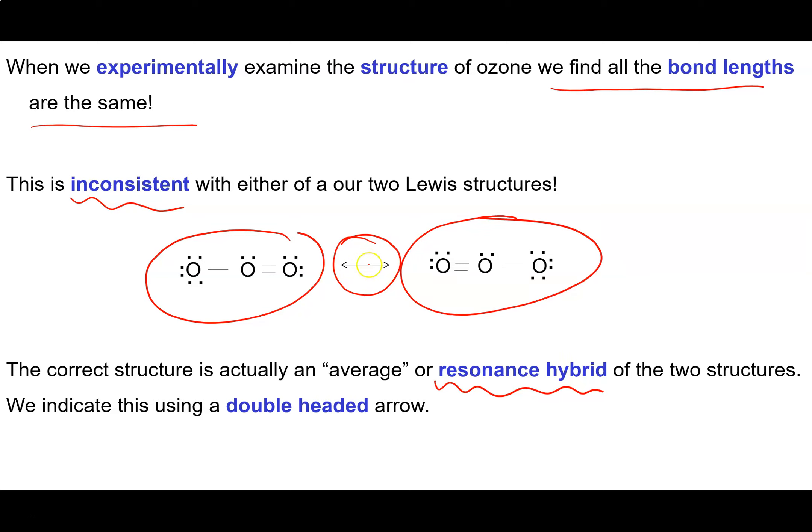Sometimes this double-headed arrow kind of gives the impression that it's flipping between two things. It's not. It's an average of the two things. It's kind of like if you have a mixed breed dog. If you mix a Great Dane with a Chihuahua, you get a dog that's in between those two sizes. It's not flipping Great Dane, Chihuahua, Great Dane, Chihuahua. That doesn't happen. We end up with one average structure of the two equivalent resonance structures.